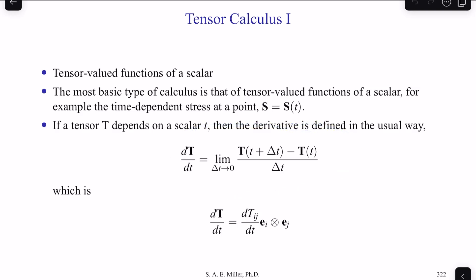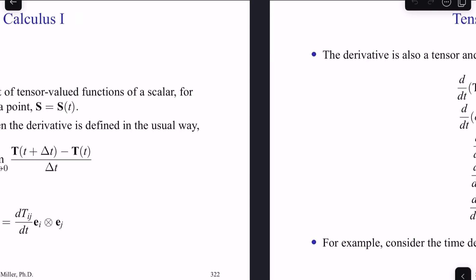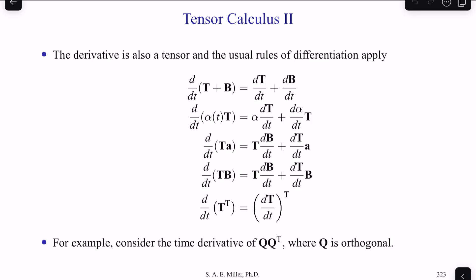The derivative can also be expressed in component form as dT/dt = dT_ij/dt e_i ⊗ e_j. The derivative itself is a tensor, and the usual rules of differentiation apply. For instance, d/dt of (T + B), two different tensors, is dT/dt + dB/dt.